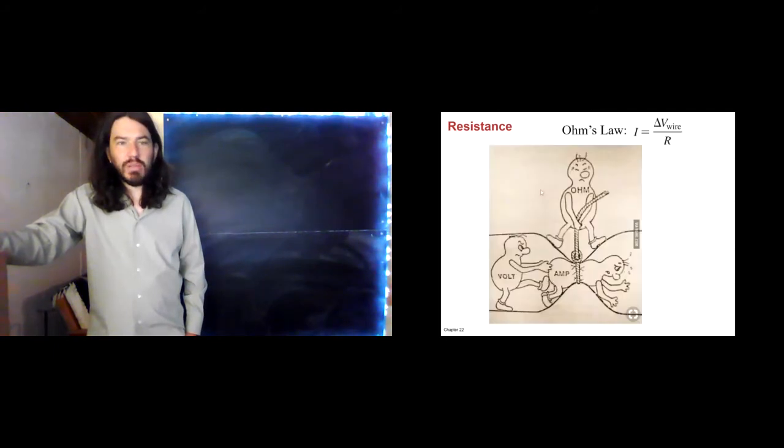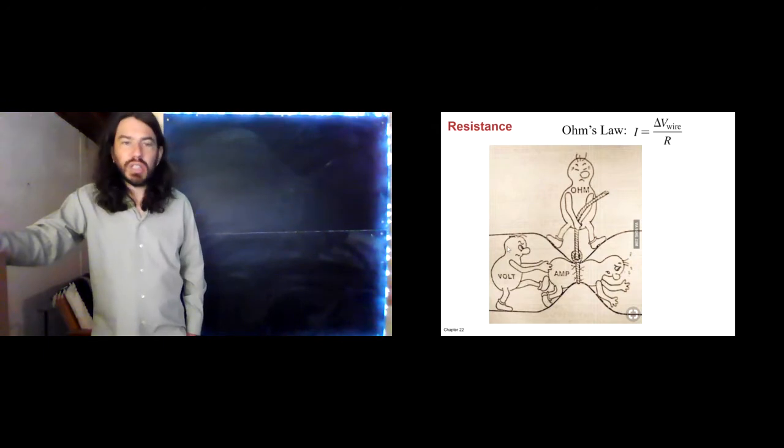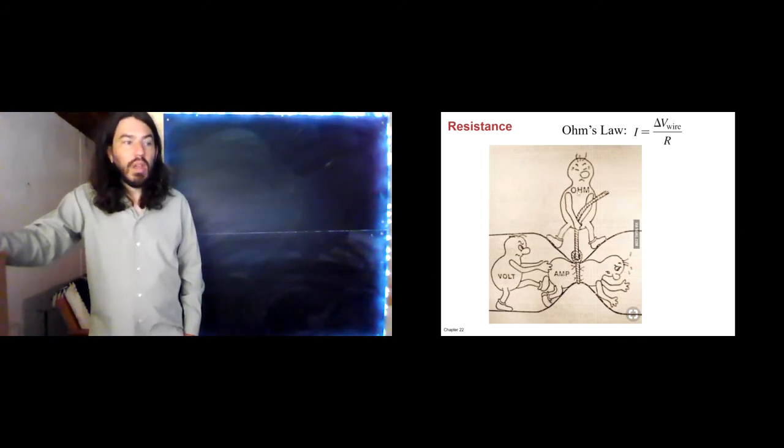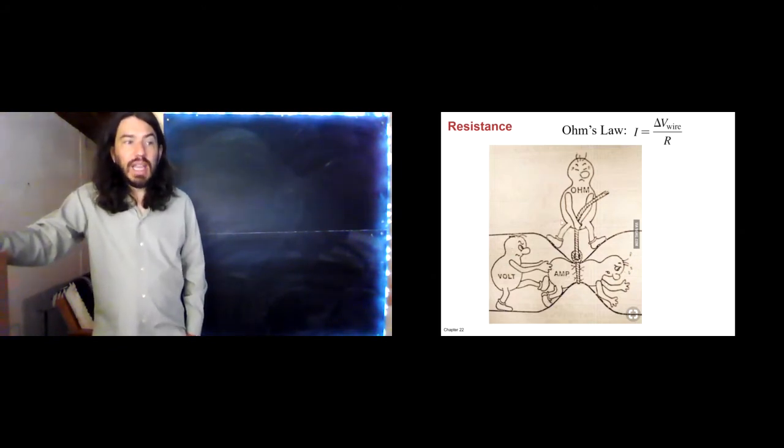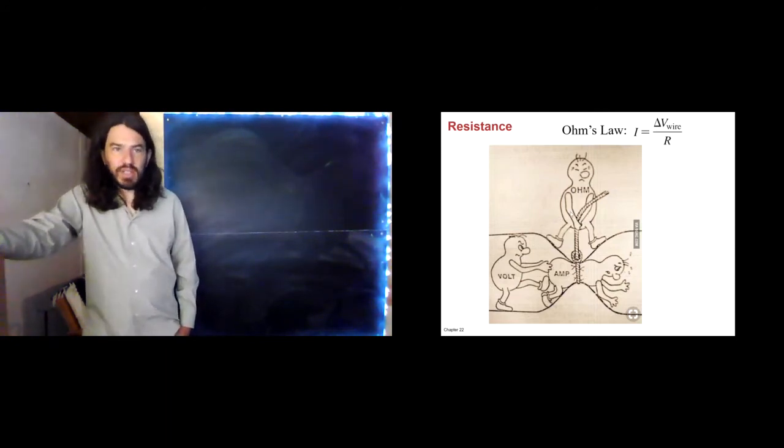There's kind of a cute little representation here of this. Ohm's Law, of course, is delta V over R equals I. The voltage, the potential difference, is what drives the current. That's what's pushing the current. Without the potential difference, we have no current. So, the potential difference is driving the current, trying to push the current through the wire. The amps are the current. And ohms are resistance. That's resisting the flow of electricity.